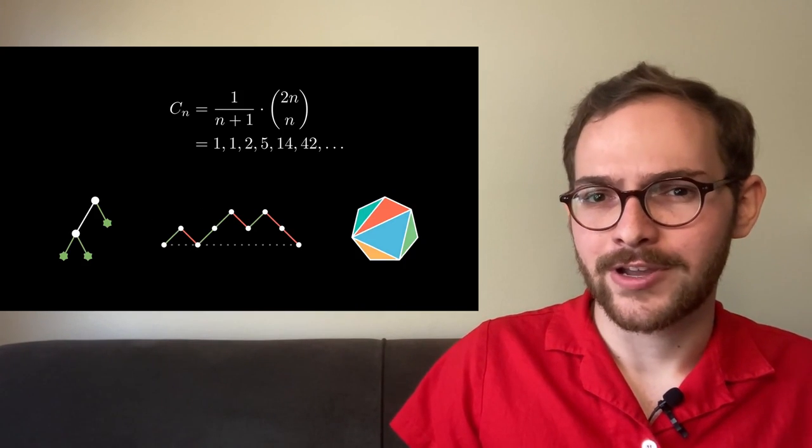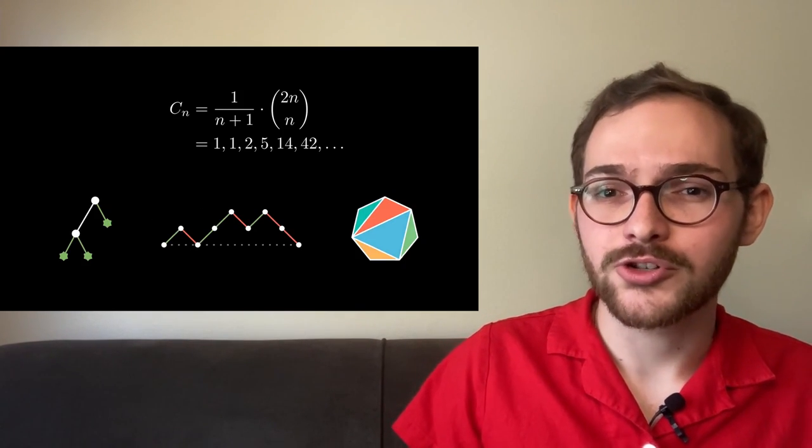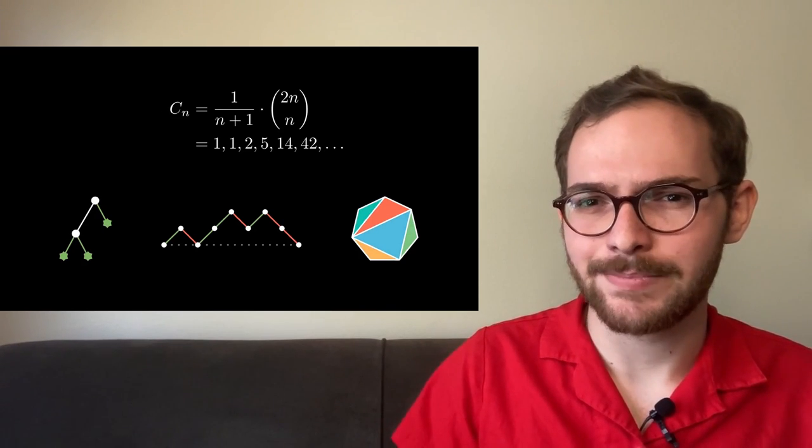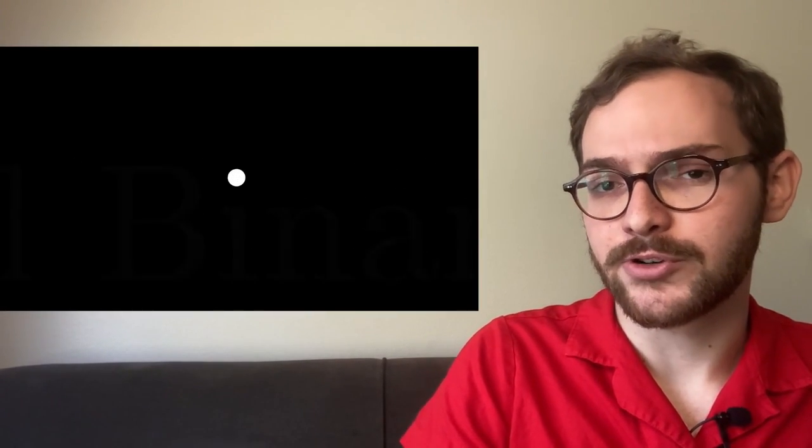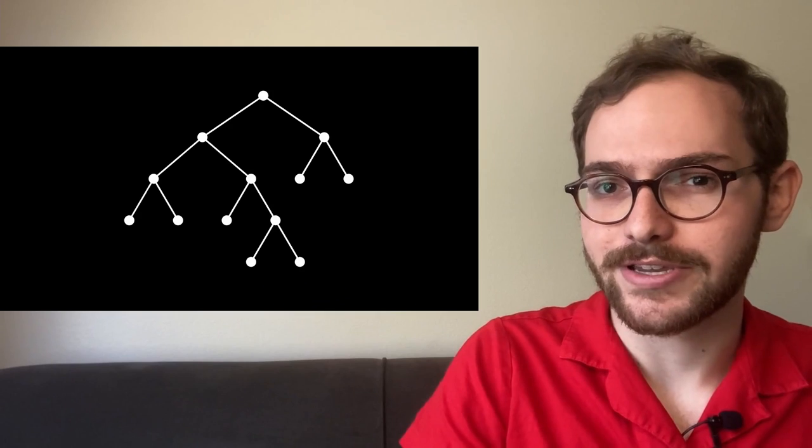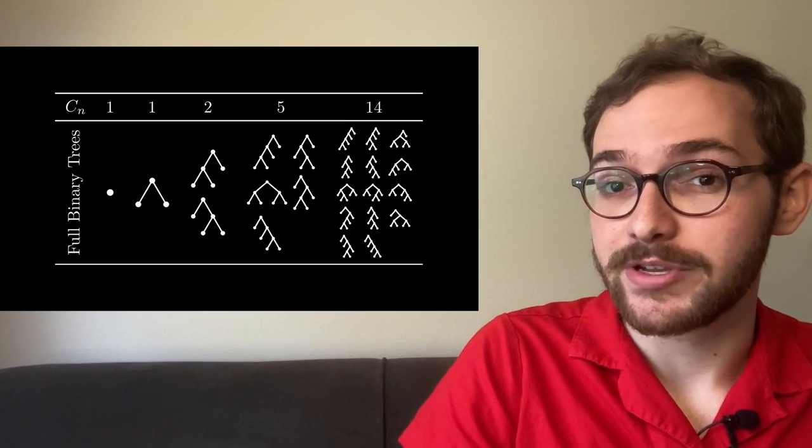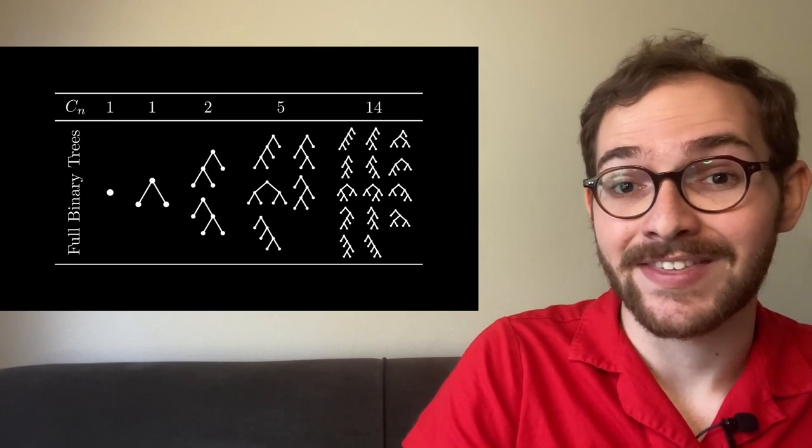In this video we're going to look at three more places out of the hundreds that our friend shows up, and I'm going to explain why it keeps showing up. Our next encounter with the Catalan numbers comes in the form of binary trees. A full binary tree is either just a node, or it's a node with a left and a right child, each of which is also a full binary tree. If you start to count them up, you'll notice that the number of full binary trees with 2n+1 nodes is equal to the nth Catalan number.